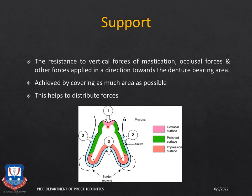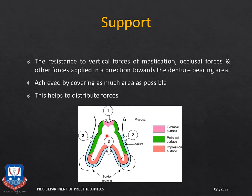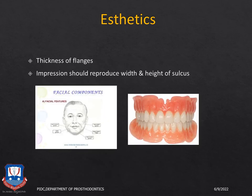Support is the resistance of the prosthesis to movement in a vertical direction toward the tissue. Remember: retention is the ability to resist dislodging forces away from the tissues, whereas support is the ability of the prosthesis to remain stable against forces directed toward the tissue — such as occlusal forces during mastication. Support is achieved by covering a large surface area: the entire denture bearing or basal seat area should be covered by the denture flanges and base, helping to dissipate and uniformly distribute functional forces.